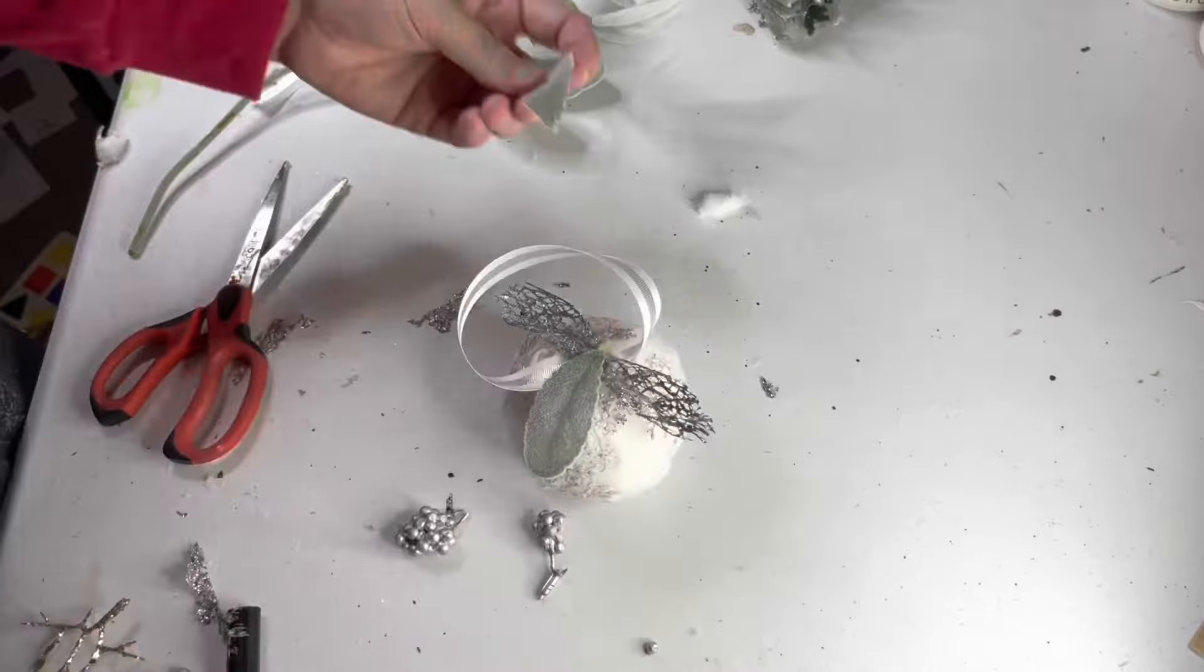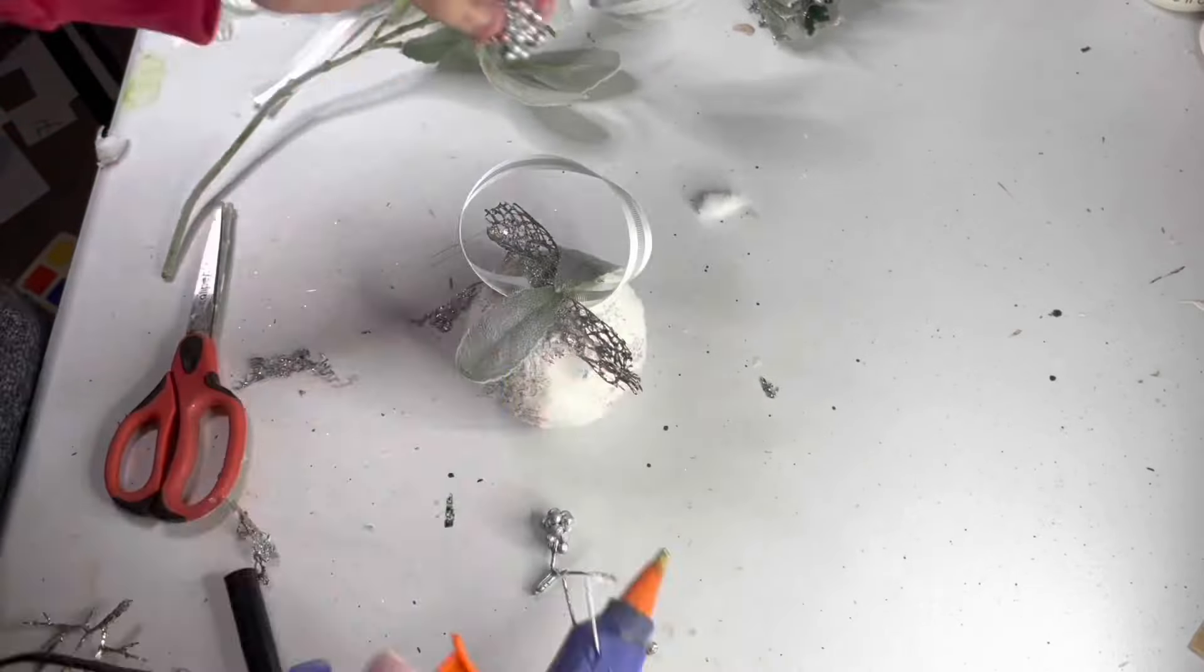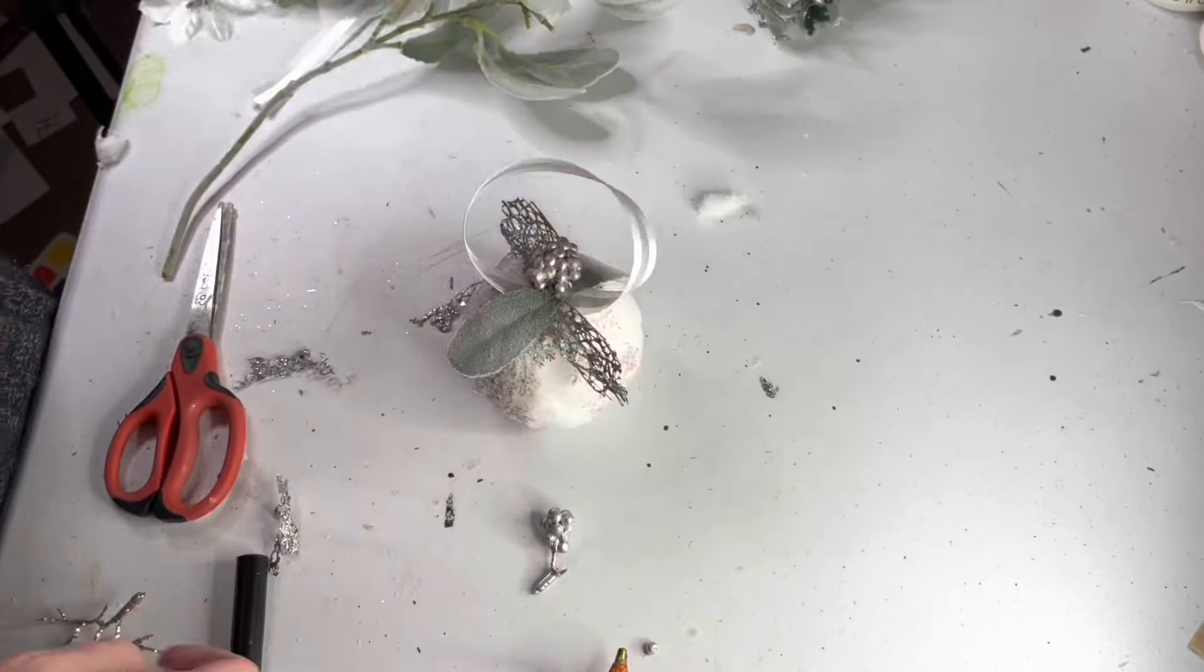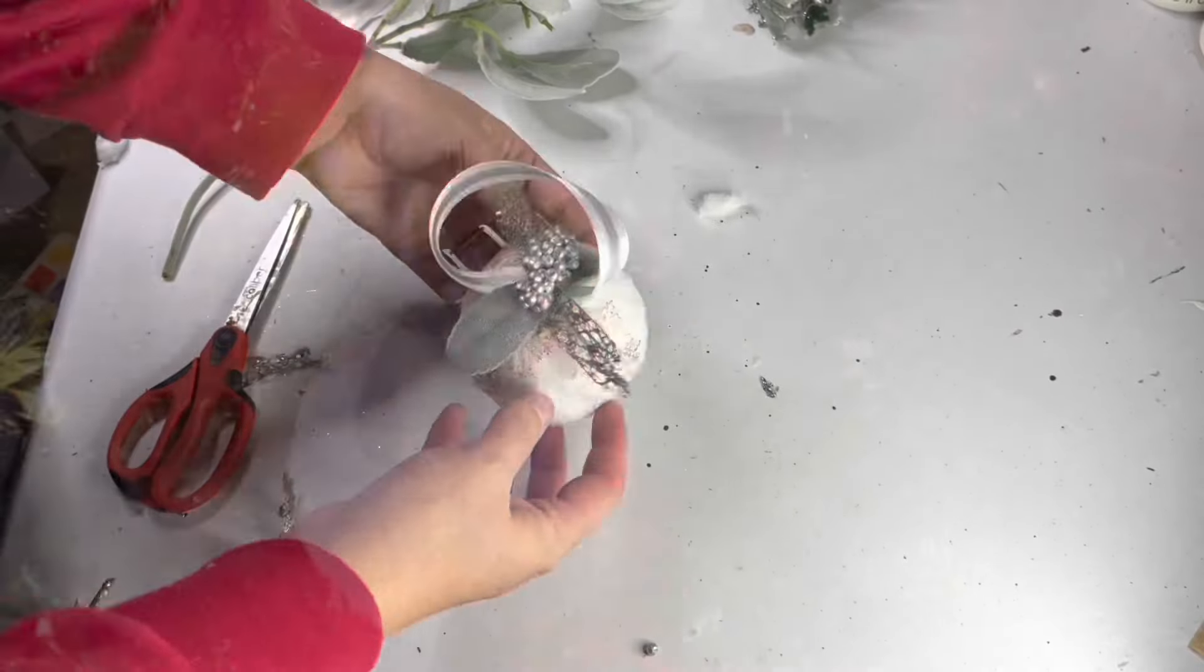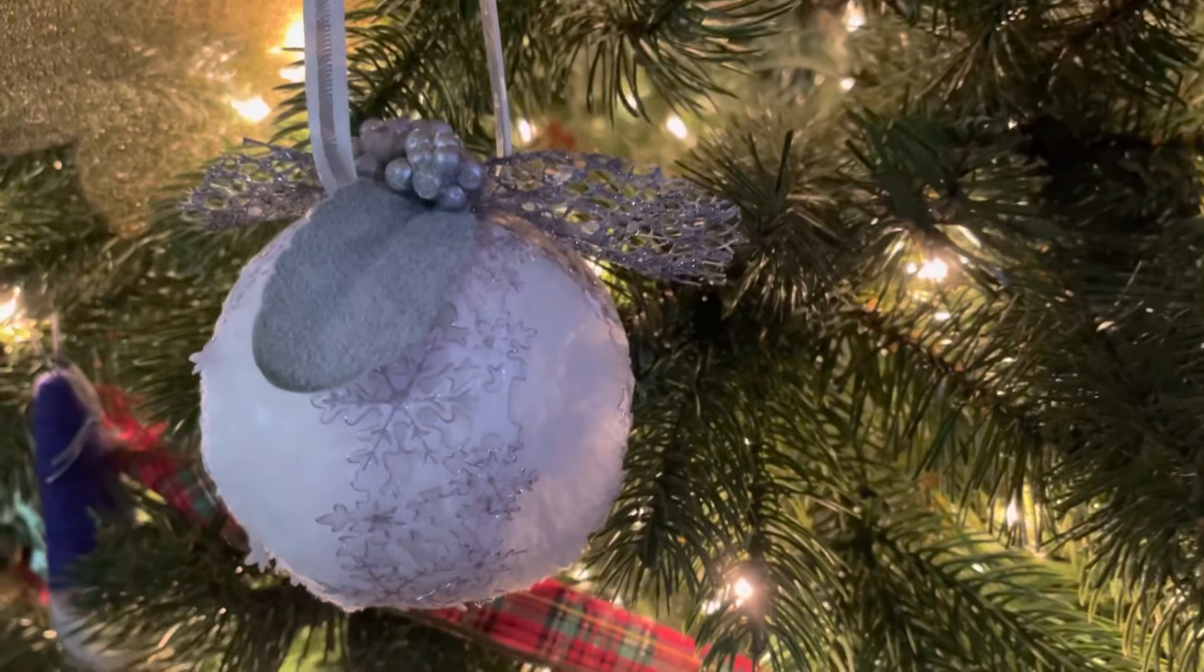Then I added some lamb's ear from Walmart and some silver leaves and berries from a Dollar Tree pick. And here it is on the tree.